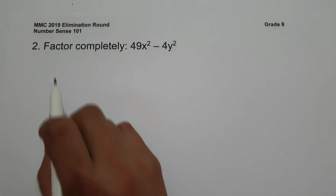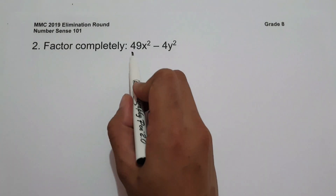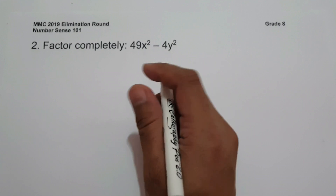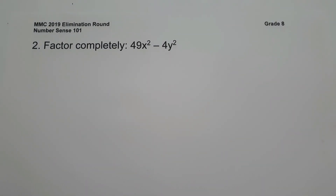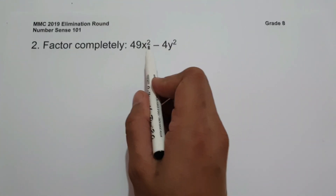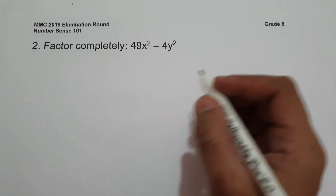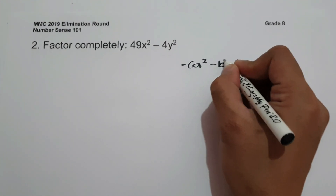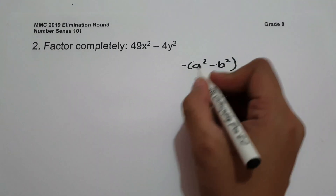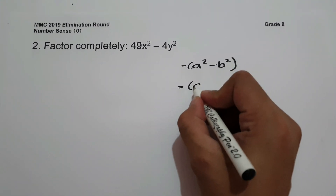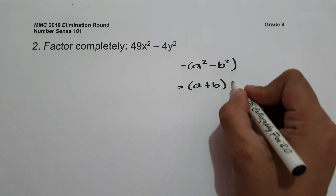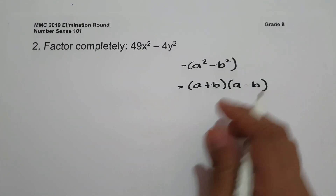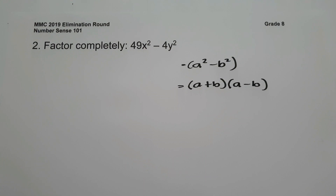For number 2, factor completely 49x² minus 4y². As you can see, 49x² and 4y² are perfect squares, written in the form a² minus b². We know that a² minus b² equals (a + b)(a - b), which is the sum and difference of the same terms.